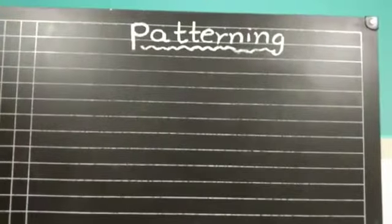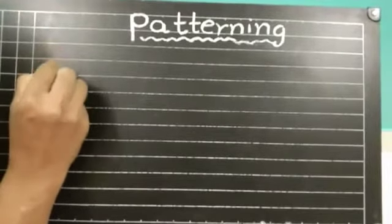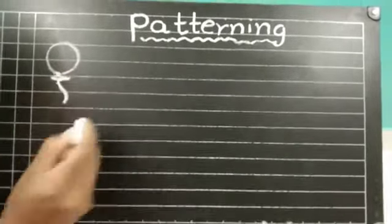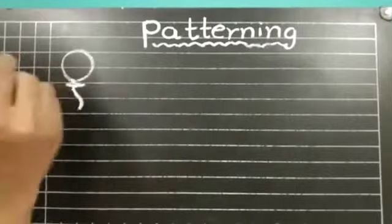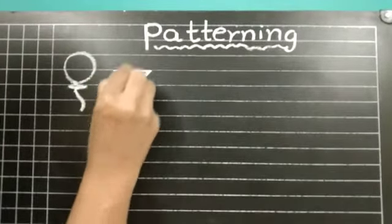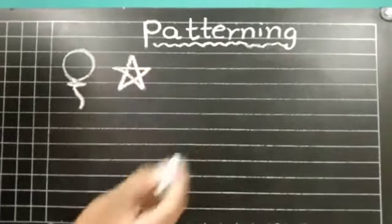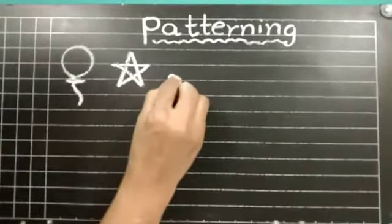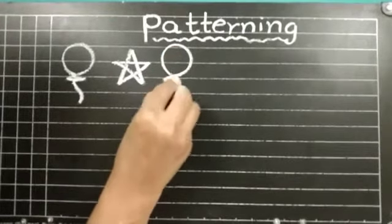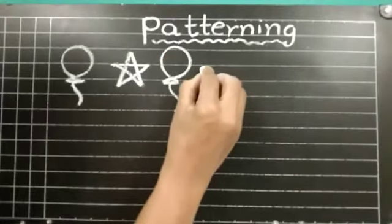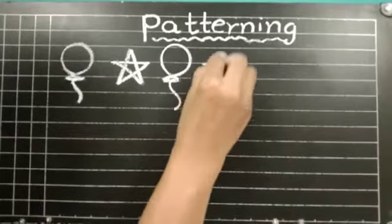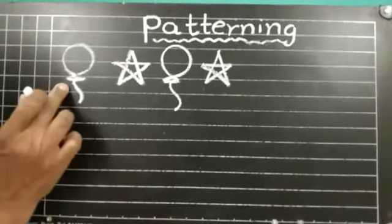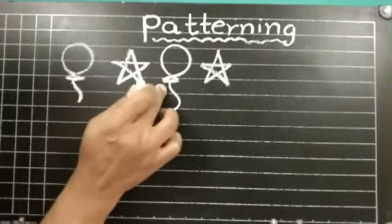Let us see more examples. What is this children? Yes, this is a balloon. Balloon. And what is this? This is a star. Balloon and star. Then, balloon and star. This is our basic pattern. Balloon, star. Balloon, star.